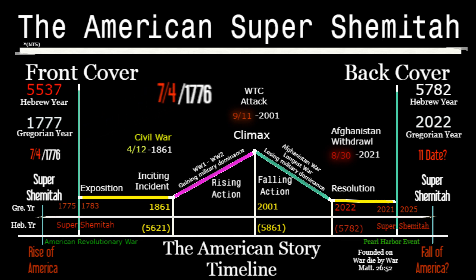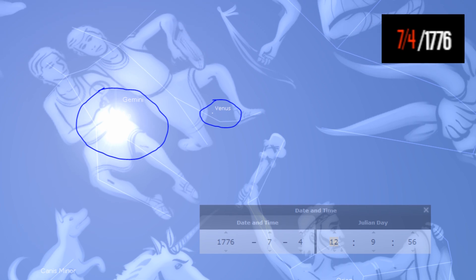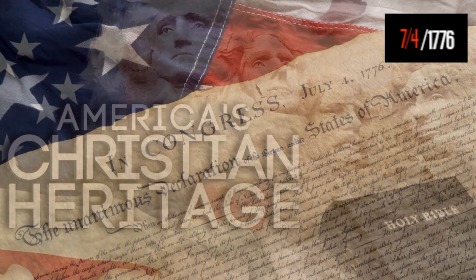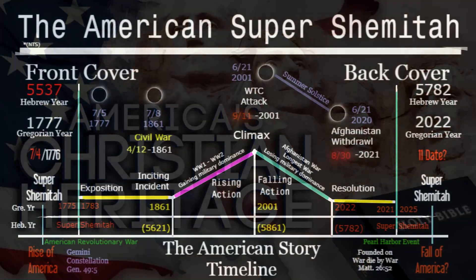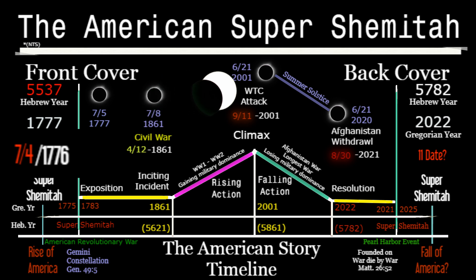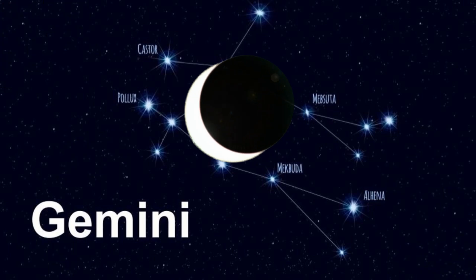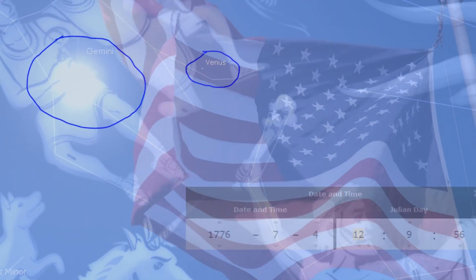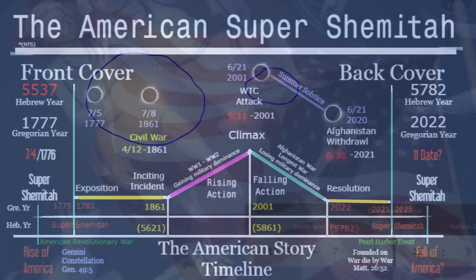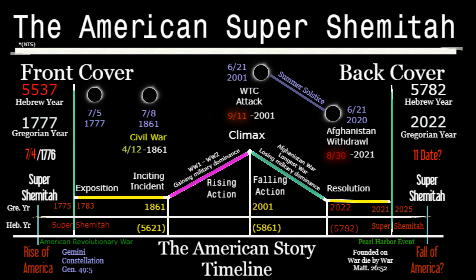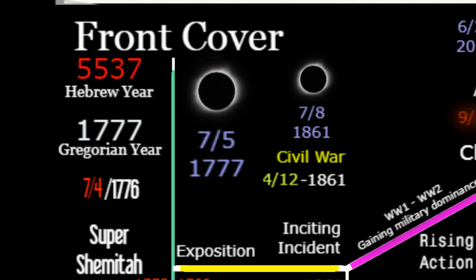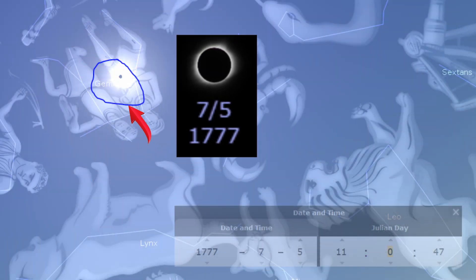Beginning on 7/4 of 1776, the sun rose in the constellation of Gemini, marking a covenant that the nation of America made with God through the Declaration of Independence. This is why all subsequent dates marking events on the Shemitah cycle have solar eclipses in the constellation of Gemini. Whenever you think of America, think Gemini — because it's related back to the very founding of this nation. One year and one day later was a total solar eclipse on 7/5 of 1777 — the year of the Super Shemitah — God using this event to signify the rise of America.